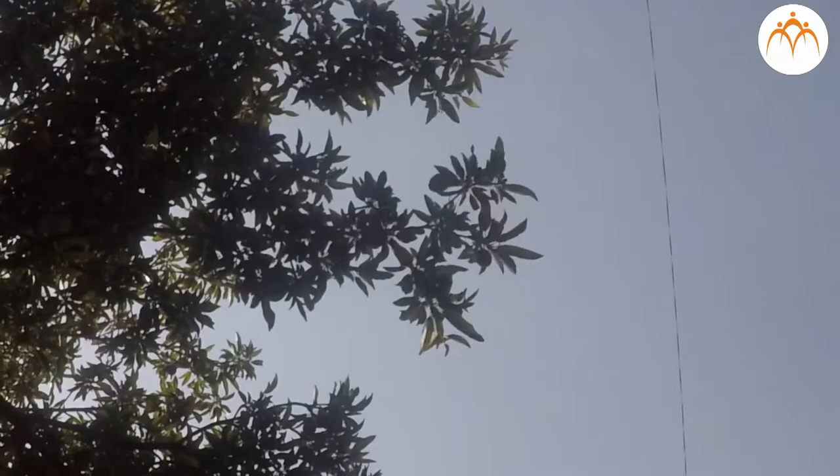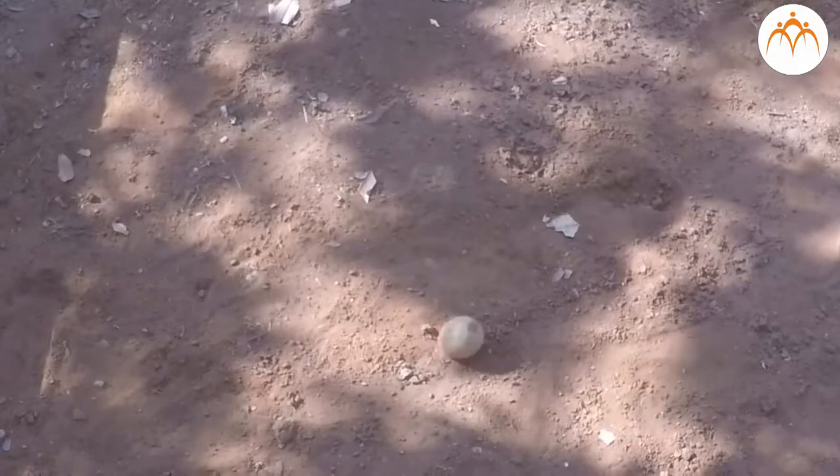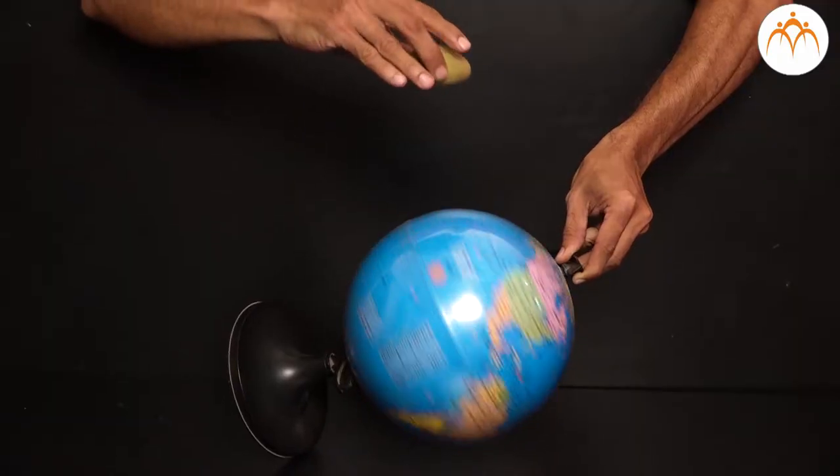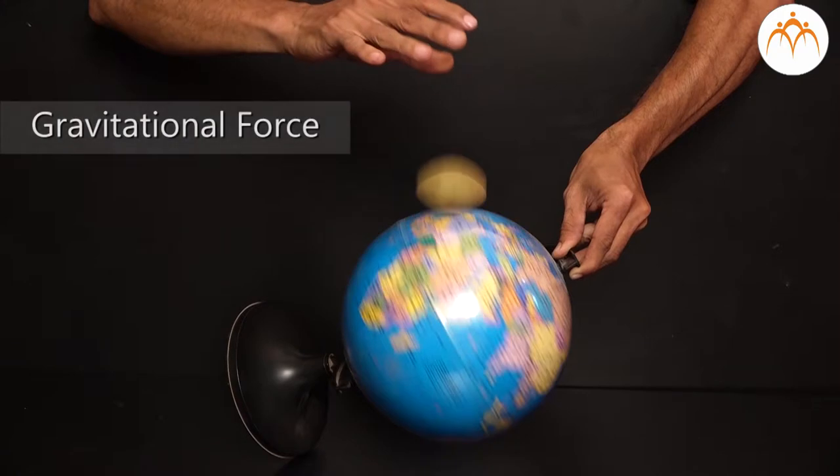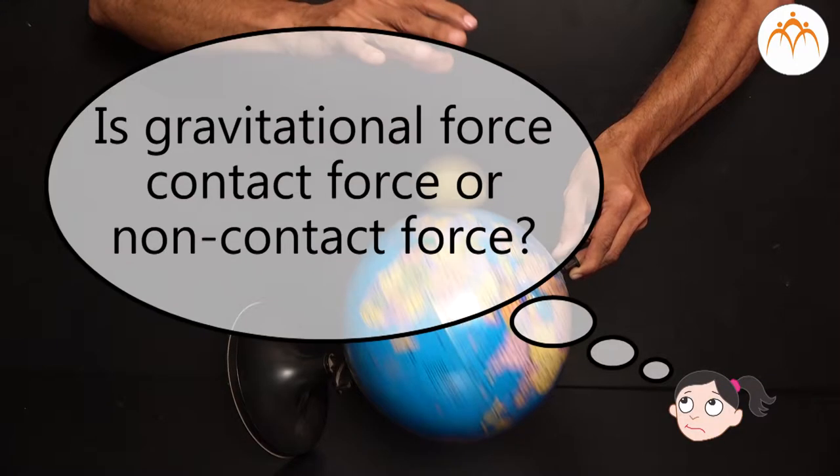Can you tell what force is causing this fruit to fall? Yes, it is our earth which is attracting towards it. It is gravitational force which is pulling it down. Is it contact or non-contact force? Take the help of your friends to find out.